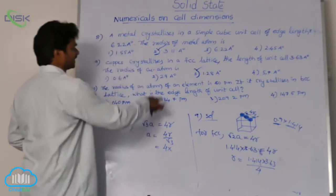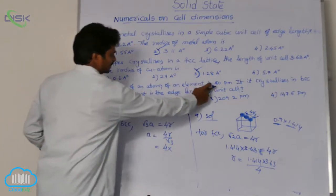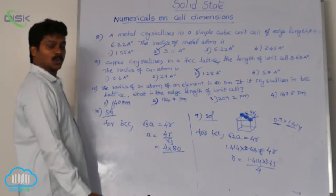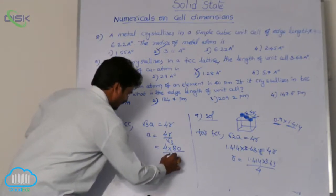4r into... What is the radius given? Radius is 80 picometers. So, 80 divided by root 3 means 1.732.